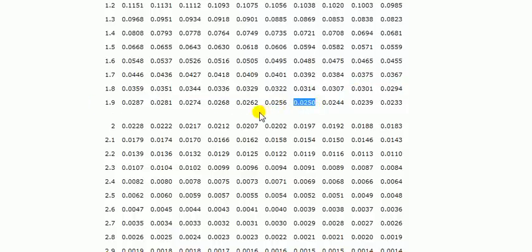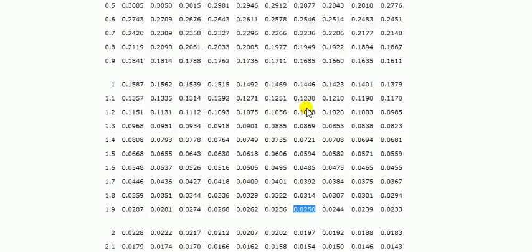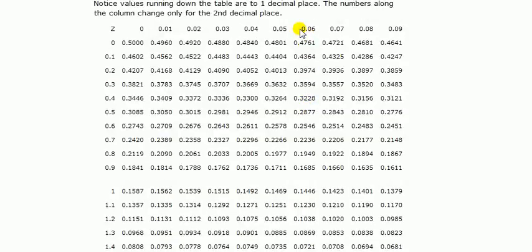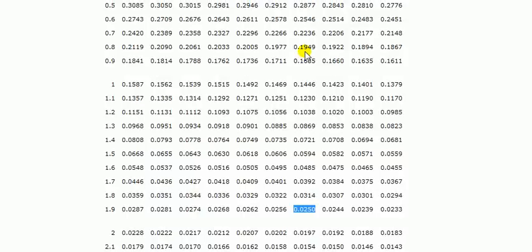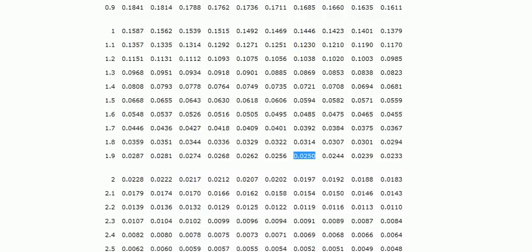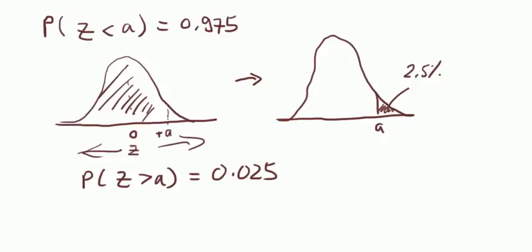So up to the first decimal place of the percentage point is given here. At the start, that's 1.9. And the second decimal place is obtained if we just trace up to this heading, 0.06. So we've got 1.9 and 0.06 added together, 1.96. So from the table, we get that a is equal to 1.96.